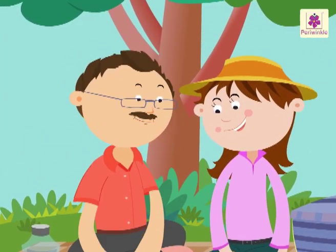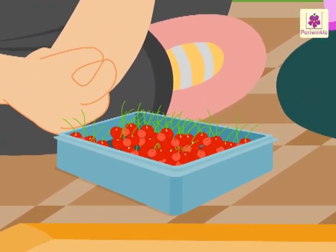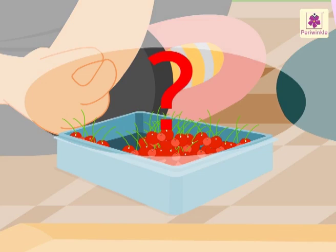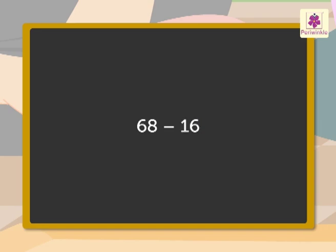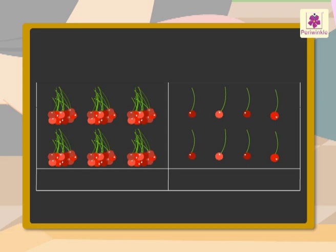Look, Mr. William is eating cherries. He has 68 cherries and eats 16 cherries. Now let's find out how many cherries are left with him. We have to subtract 16 from 68. 68 cherries mean six tens and eight ones, and 16 cherries mean one ten and six ones.